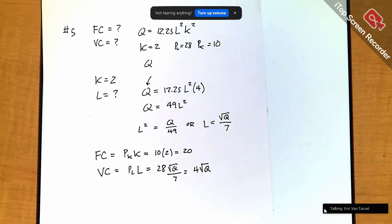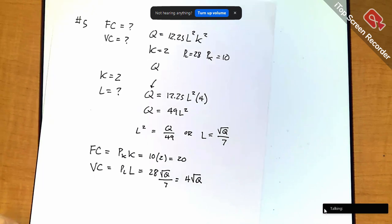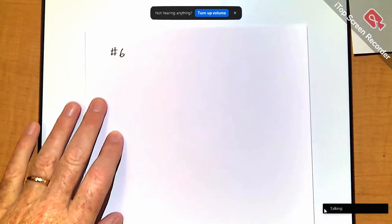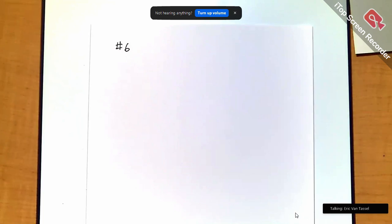Alright, so, I think your variable cost would be 4 root Q. Or 4 root Q. Yeah. Alright, 4 root Q. Alright.